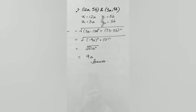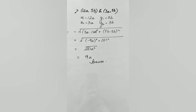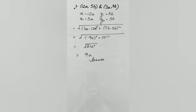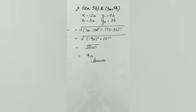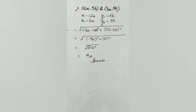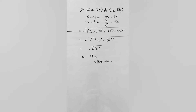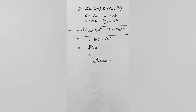Here is another question which involves variables, and the coordinates are (12a, 5p) and (3a, 5b). Here x1 equals 12a, y1 equals 5p, x2 equals 3a, and y2 equals 5b. Using the formula, we get under root of (3a minus 12a) squared plus (5b minus 5p) squared. This gives minus 9a squared plus 0, and before solving we get 81a squared, which comes out as 9a. This is our answer.